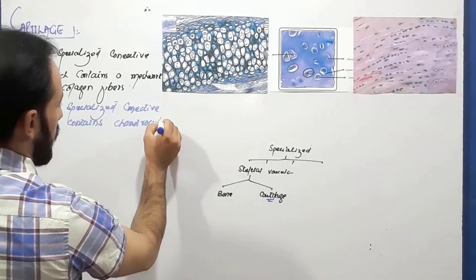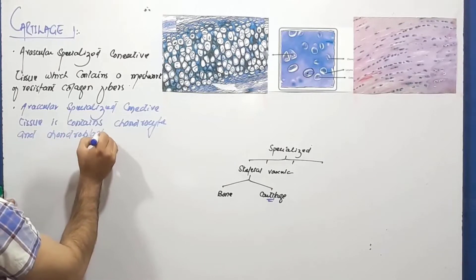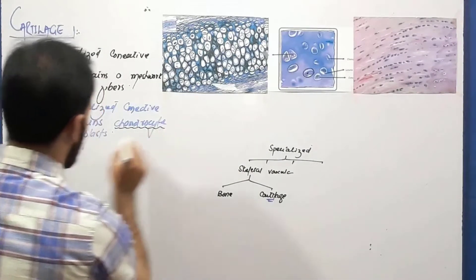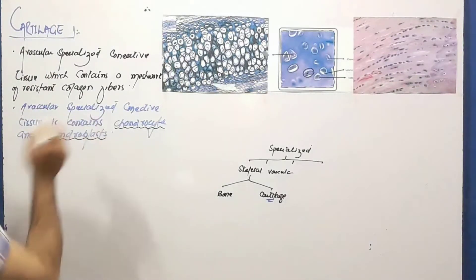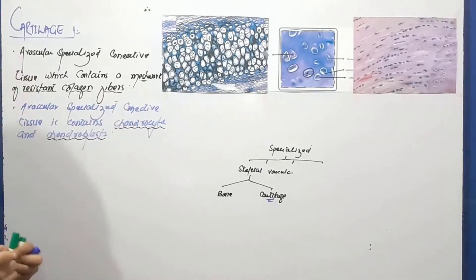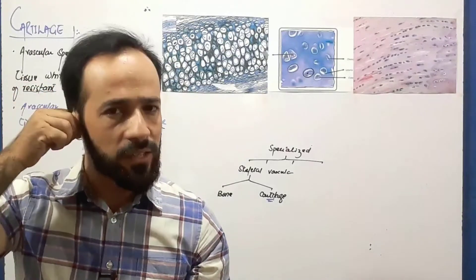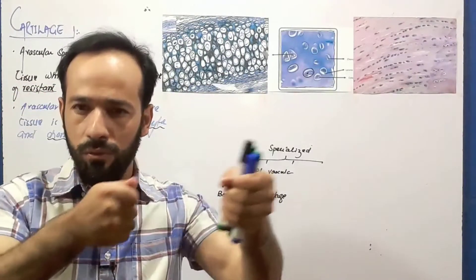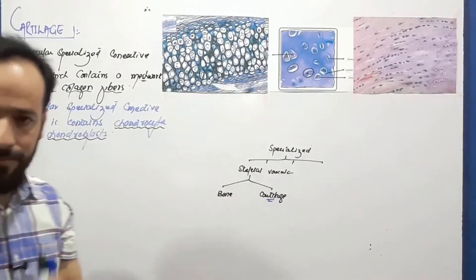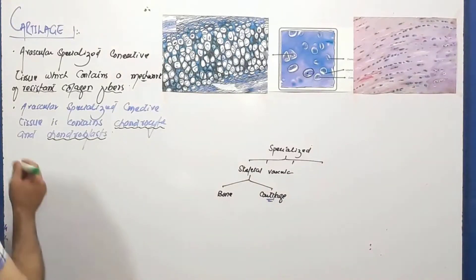So our cartilage is formed by chondrocytes and chondroblast cells. It is a specialized connective tissue which contains a meshwork of resistant collagen fibers — it is a little bit resistive and elastic. For example, here in the ear pinna we have cartilage. If you pull it over and over, it will not be cut, because it contains a meshwork of resistant collagen fibers.